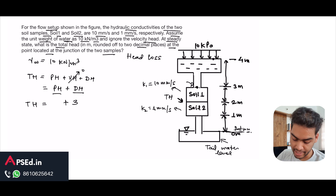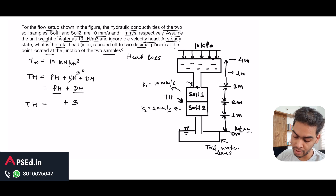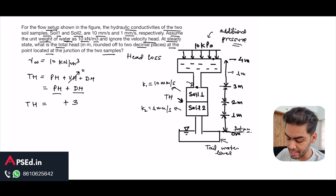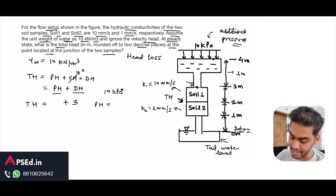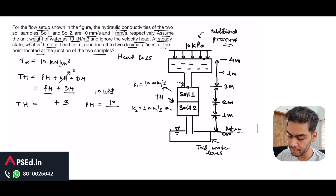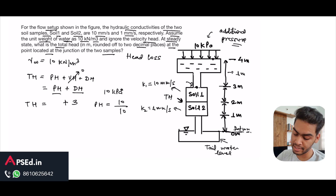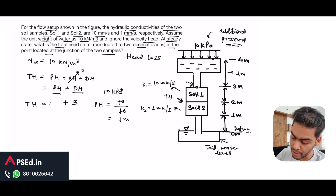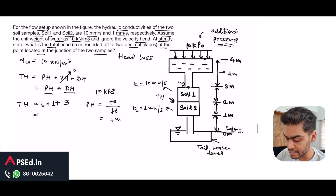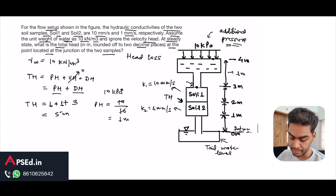Now for the pressure head: the height of water above the entry point is 1 meter, so that contributes 1 meter of pressure head. Additionally, an external pressure of 10 kPa is applied at the top. Converting that to pressure head — pressure divided by unit weight of water (10 kN/m³) — gives 1 meter. So the pressure head contribution is 1 + 1 = 2 meters.